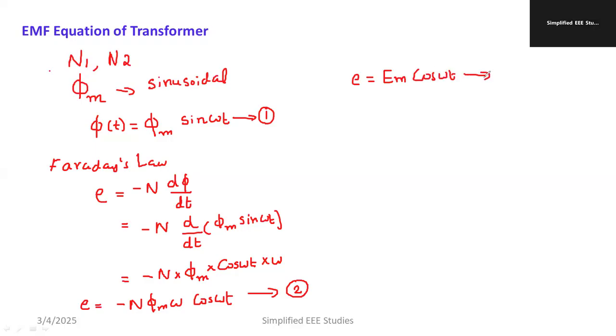Now what I am going to do is compare equation number 2 and 3. By comparing equation number 2 and 3 respectively, I can get E_m is equal to N into phi_m into omega.